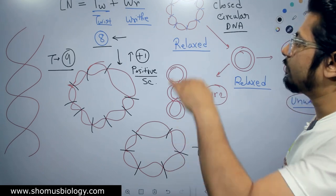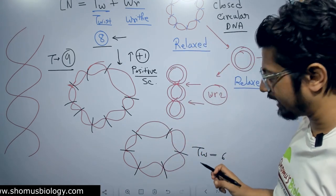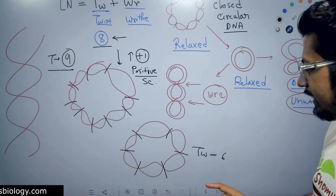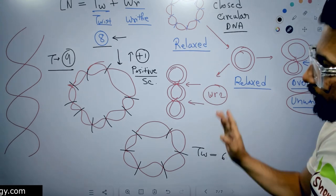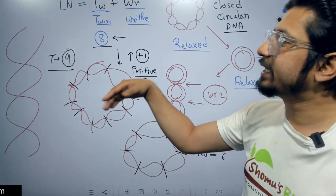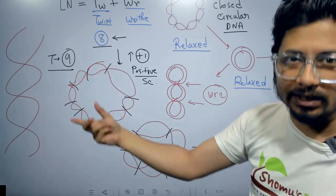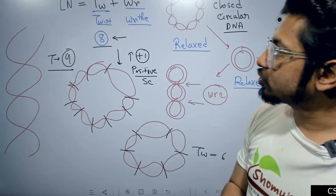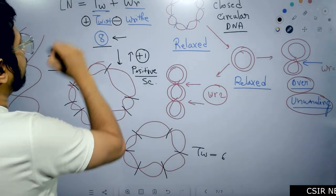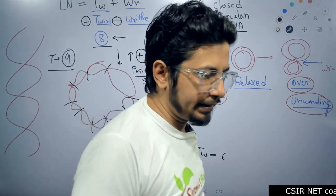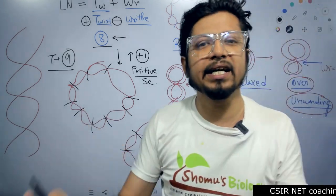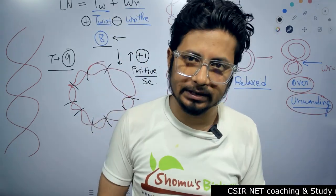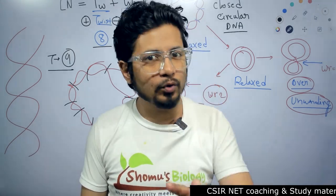So in one case we have negative supercoiling where the twist number decreased from 8 to 6, and in another case we have positive supercoiling where the twist number increased from 8 to 9. Negative and positive supercoiling comes from the change in the twist number. The twist number can be positive or negative. Positive twist means positive supercoiling in the DNA; negative twist means negative supercoiling in the DNA. If you want to know more about supercoiling, I have a separate video for that — but this video is for linking number.